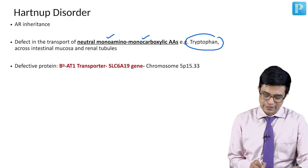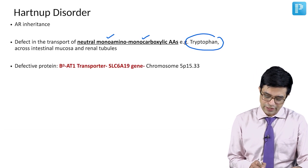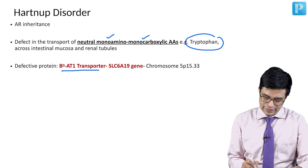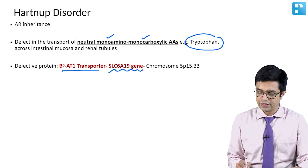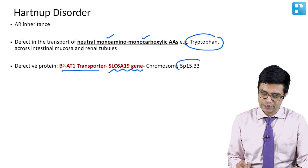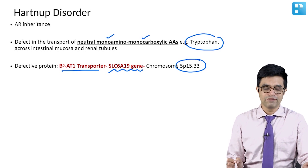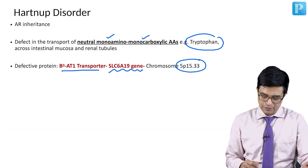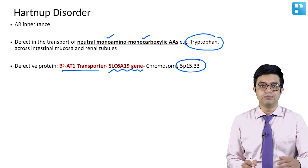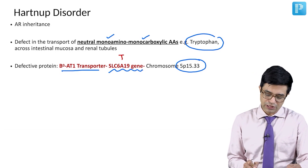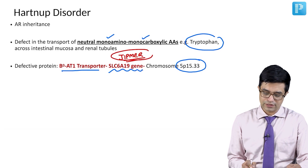The molecular basis involves a defective protein in the B0AT1 transporter coded by the SLC6A19 gene. The chromosome involved is the short arm of chromosome 5, specifically 5p15.33. Although this is a super-specialty topic, two years back in the PG entrance exam of GIMPR, the name of the gene and the transporter protein was asked.